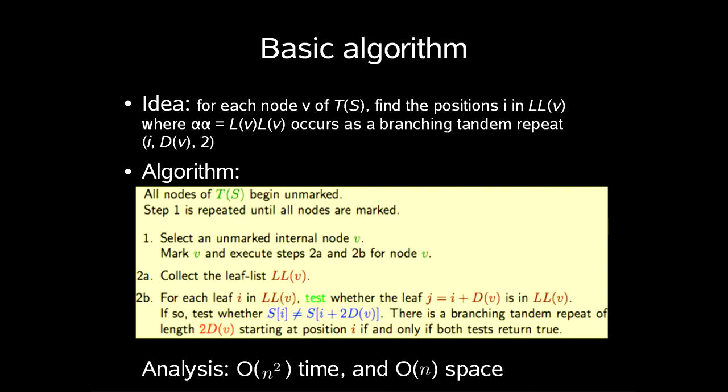All nodes of T(S) begin unmarked. Step 1: Select an unmarked internal node v. Mark v and execute steps 2a and 2b for node v. Step 1 is repeated until all nodes are marked. So 2a is to collect the leaf list LL(v).